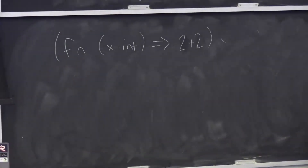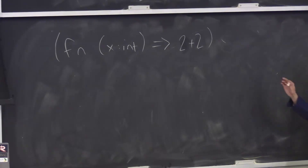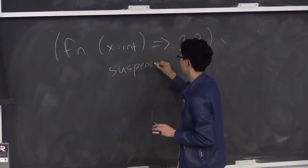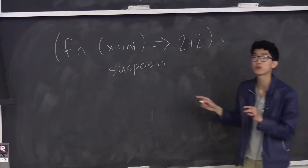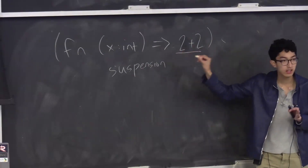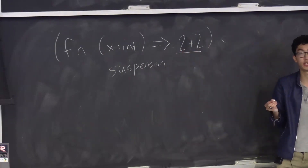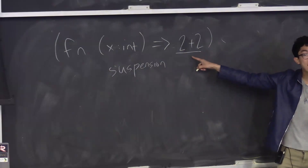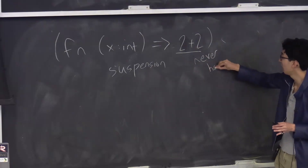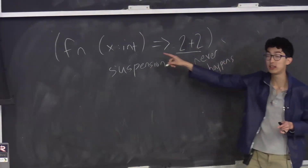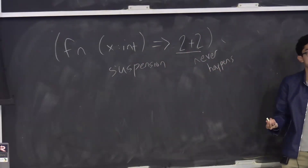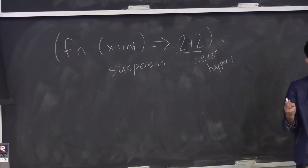The answer is no, because of a property called a suspension. Any lambda expression, no matter what's inside, must be a value — it always is a value. This two plus two never happens until I get the input argument. So when I give it x, then we do the two plus two. Basically, functions are values.